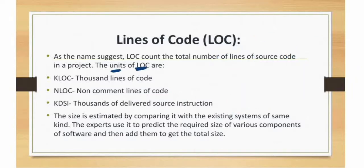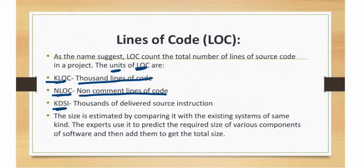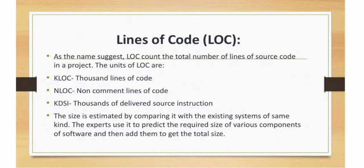The units used for LOC are: KLOC — 1,000 lines of code; NLOC — non-comment lines of code; and KDSI — Thousands of Delivered Source Instructions. So we have three main units. LOC counts the total number of lines of source code in a project.